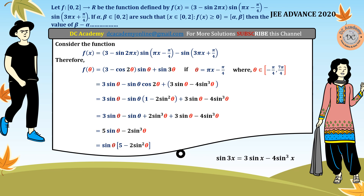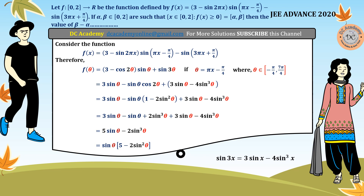The function becomes sin(theta) times (5 - 2*sin²(theta)). In this kind of problem, the main aim is to convert the function into a simpler form, either in sine or cosine — mostly sine. Note that if we had cos(3*theta) instead, we'd use the cosine triple-angle formula, since cos(3x) is expressed in cosine only.